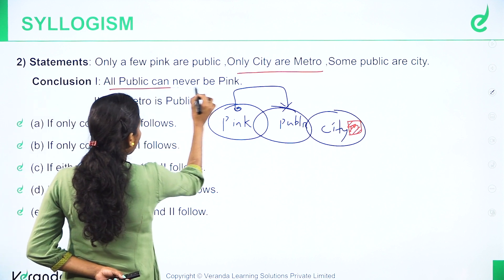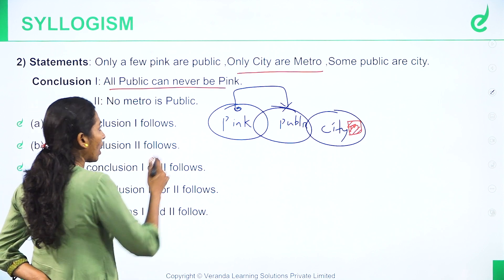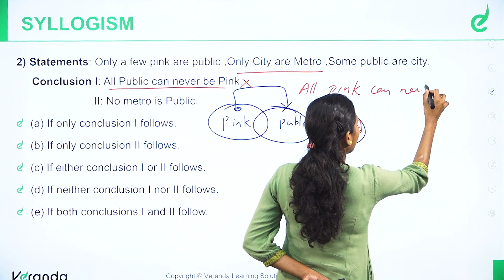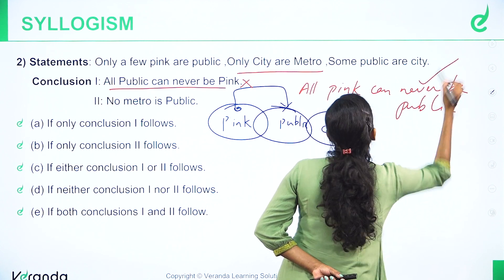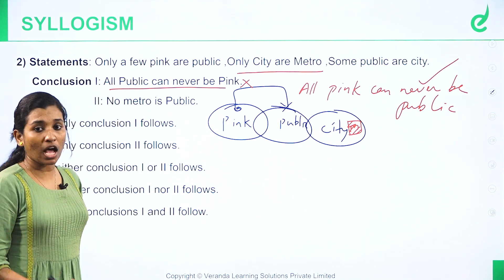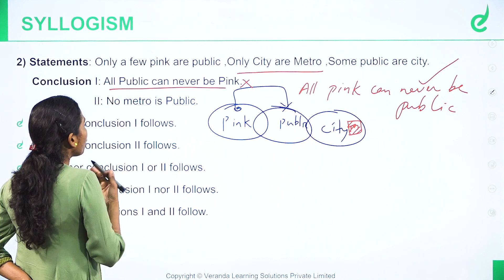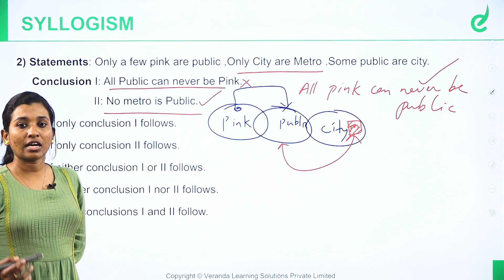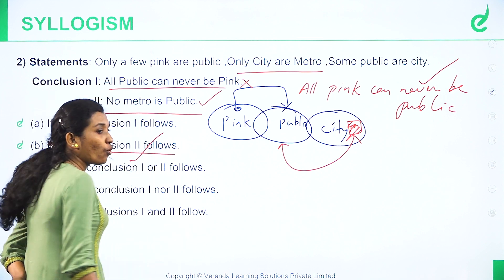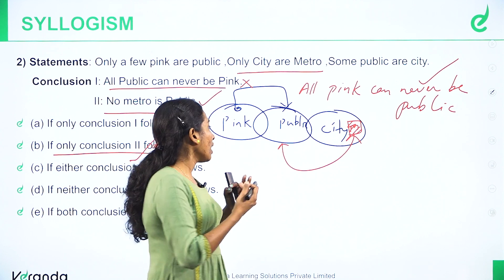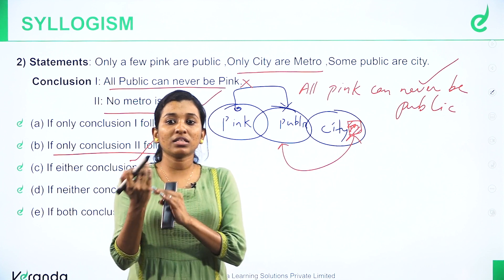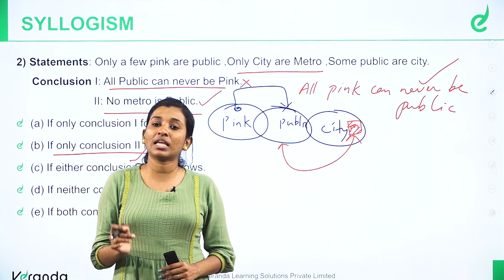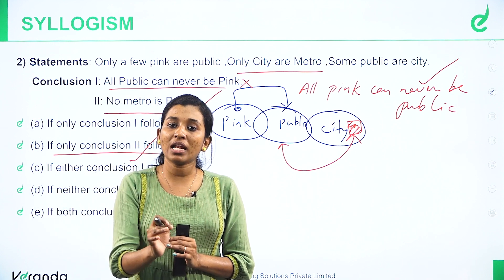All public can never be pink — that conclusion is wrong, so the first one is incorrect. No metro is public — we will go with answer B. This is why we don't combine public and metro directly. If you go to the exam, you can highlight the speciality in a box.